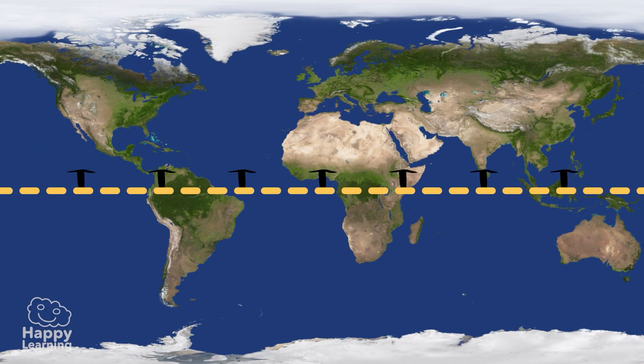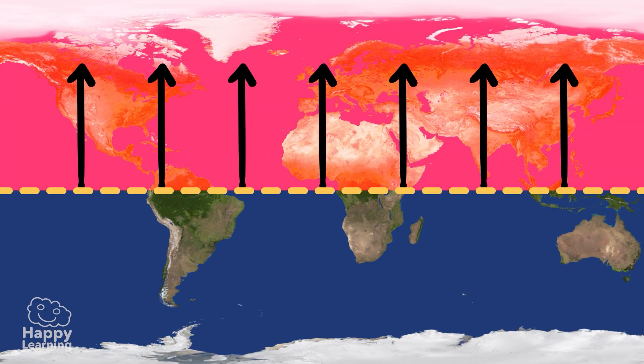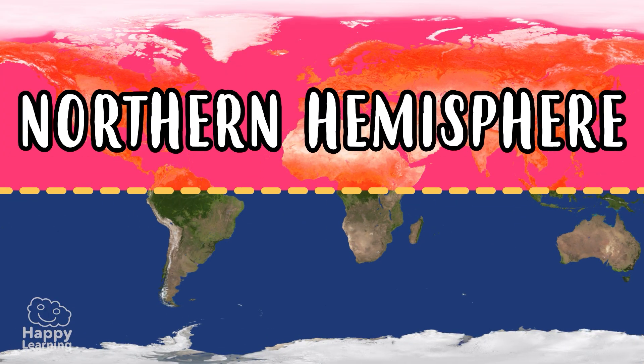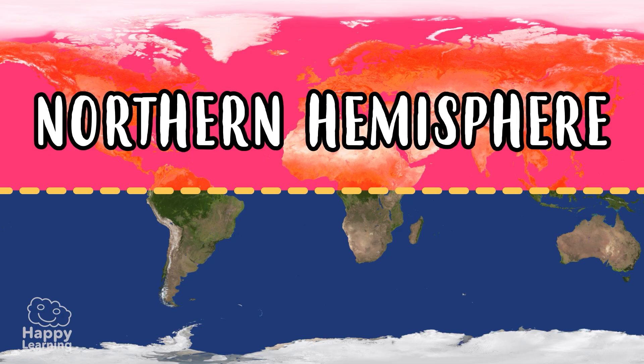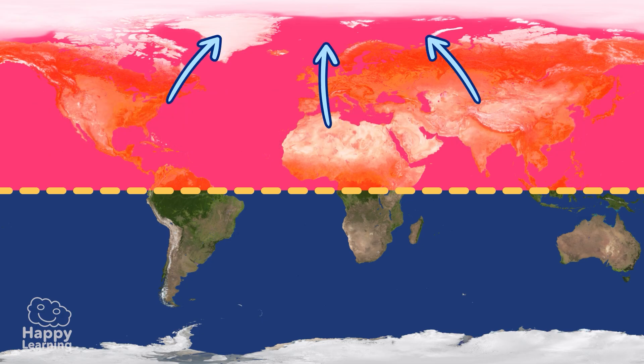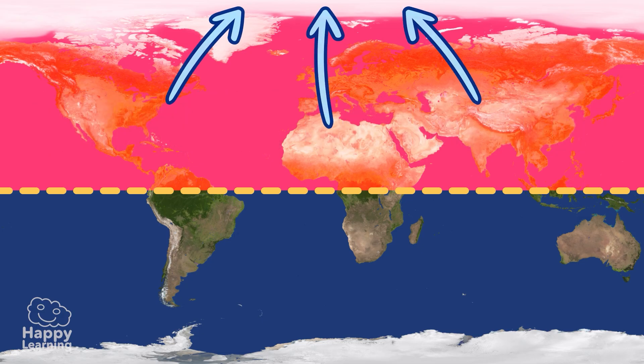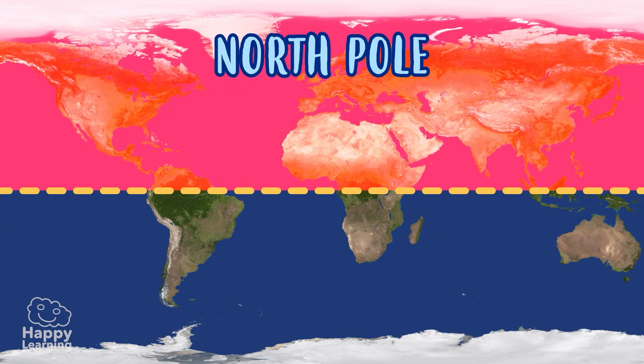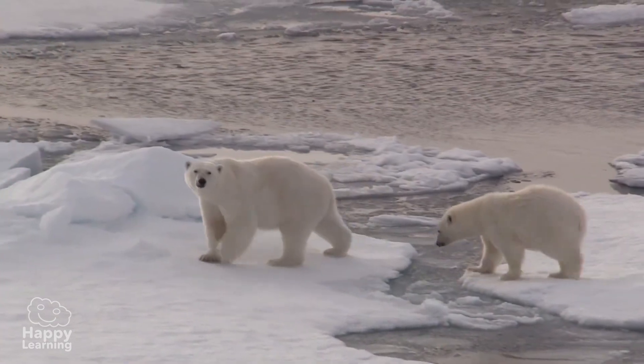Everything from the equator upwards is in the northern hemisphere, and its furthest point is the North Pole, where polar bears live.